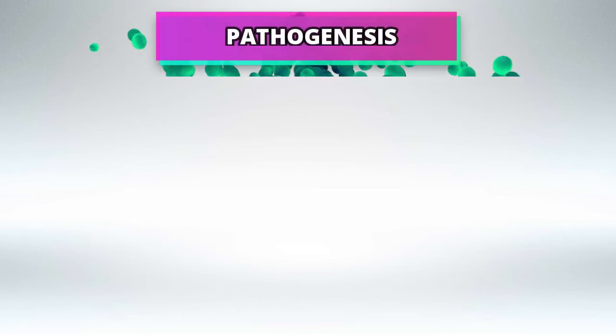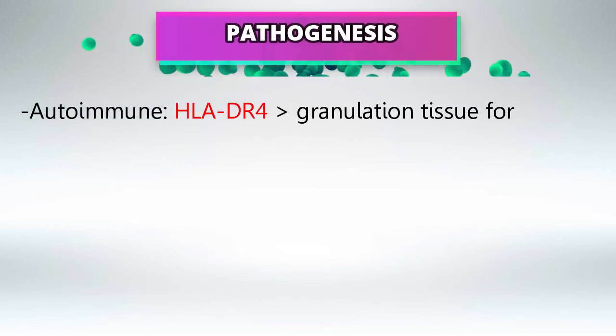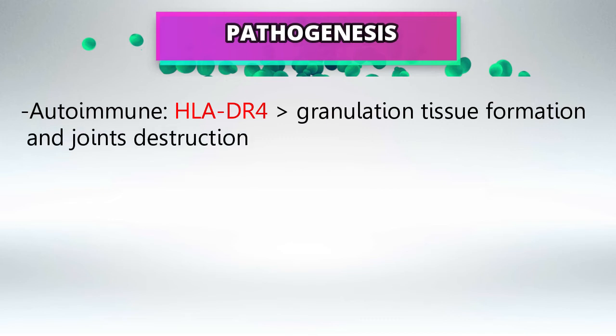First, let's talk about the pathogenesis of rheumatoid arthritis. It's an autoimmune disease relating to HLA-DR4, and this will cause granulation and joint destruction. It's a systemic disease, so symptoms will appear all over the body.